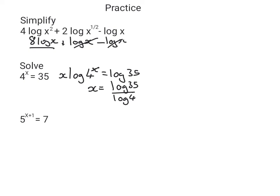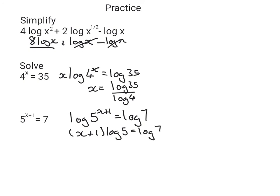On this next question we have the unknown in the power, so we take logs of both sides: log of 5 to the power of x plus 1 equals log of 7. Bring the power to the front: x plus 1 times log of 5 equals log of 7. Divide by log 5 to get x plus 1 equals log of 7 over log of 5, then take away 1 from both sides and there's our answer.